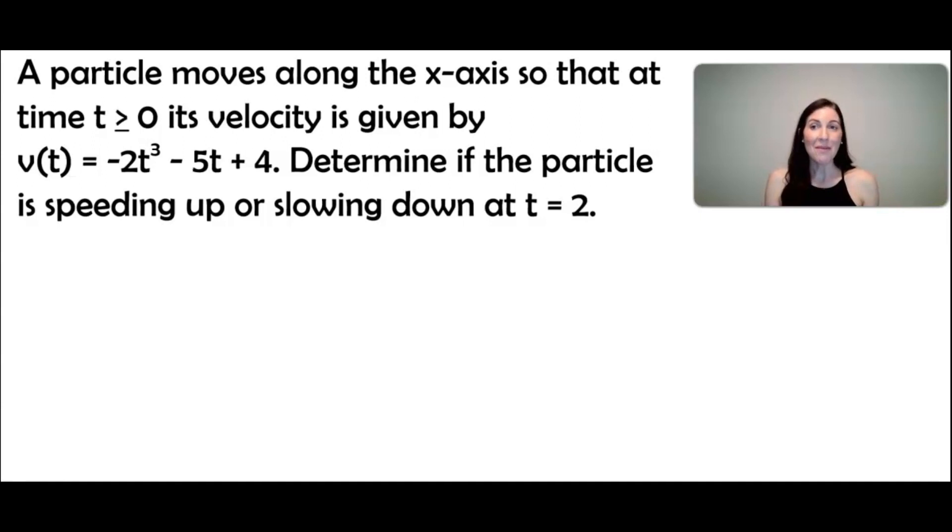So in this problem we're going to talk about whether a particle is speeding up or slowing down. We have a particle that moves along the x-axis so that at time t is greater than or equal to zero, its velocity is given by this v(t) equation: v(t) = -2t² - 5t + 4. We want to determine if the particle is speeding up or slowing down at t equals 2.